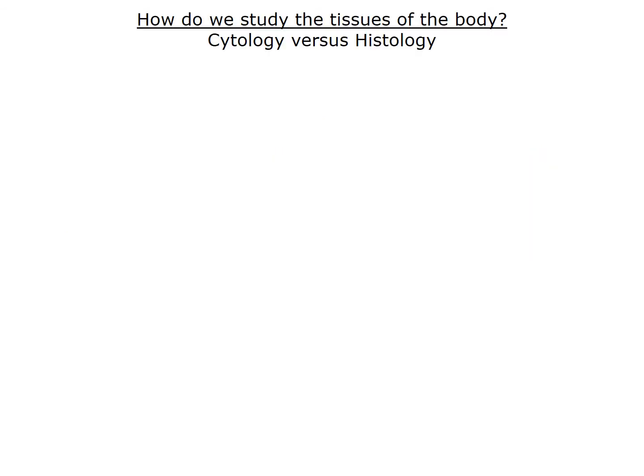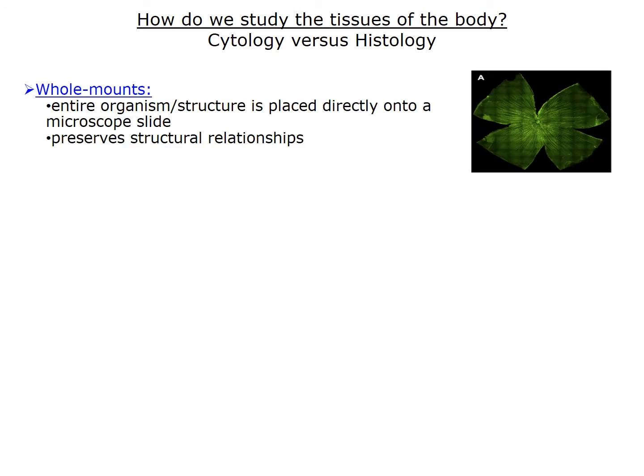In order to study the tissues of the body, we first need to distinguish cytology from histology. Cytology involves the microscopic observation of stained cells, but it does not require sectioning. In some cases, one can obtain cells from the body in a suspension that can be analyzed directly. Sometimes an entire organism or structure can be placed directly onto a microscope slide, although this isn't as common when studying human tissues. This technique is useful to preserve structural relationships.